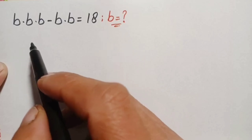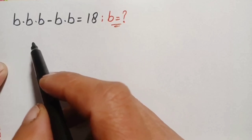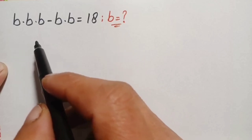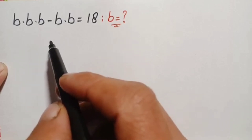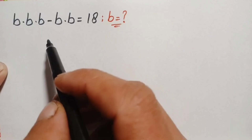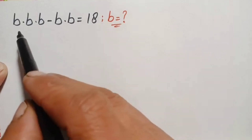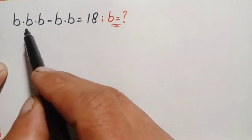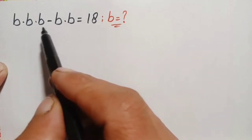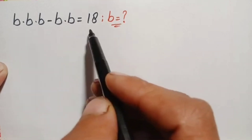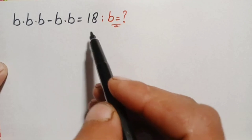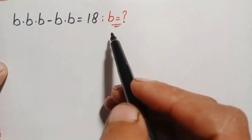Hello everyone, you are welcome to Math Explorer. Today we will solve this algebra math problem: b times b times b minus b times b is equal to 18, and we will find the value of b.